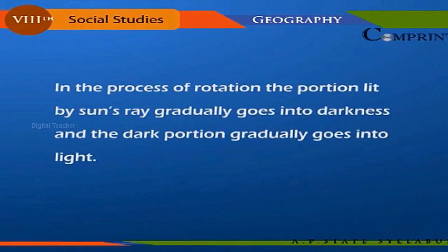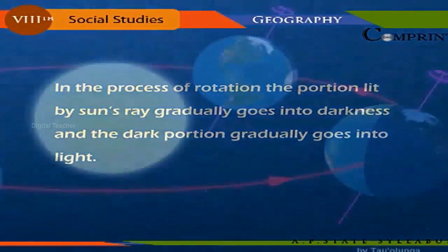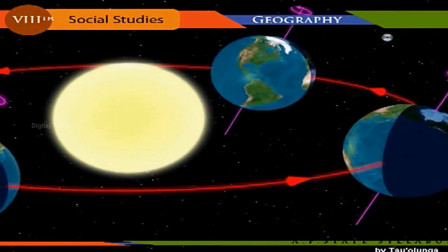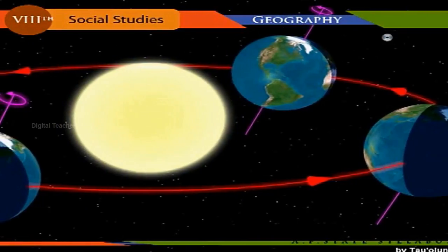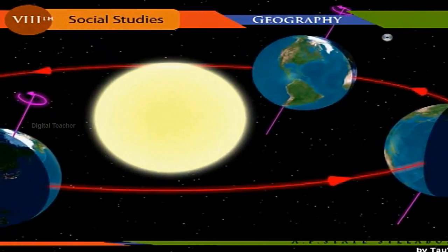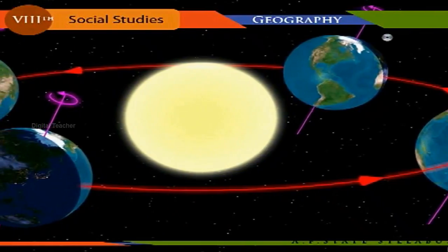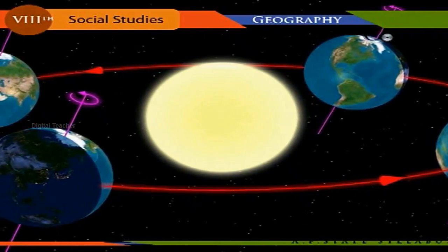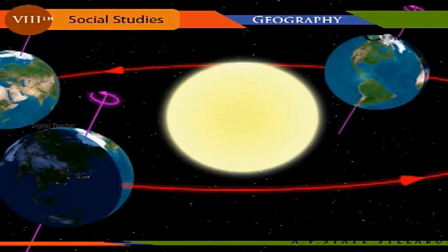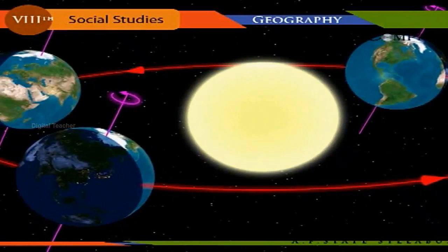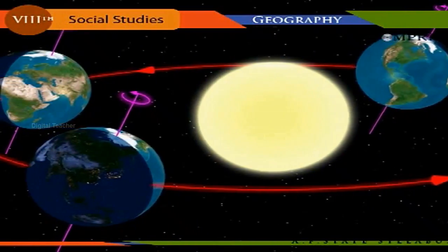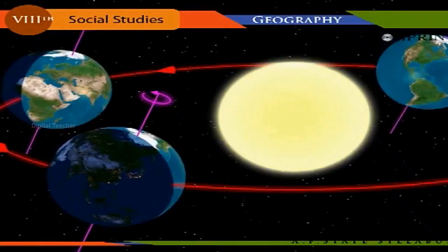Day and night are caused due to earth's rotation. In the process of rotation, the portion lit by the Sun's rays gradually goes into darkness, and the dark portion gradually goes into light. The earth also moves around the Sun while moving around its axis; this movement is called revolution. The fixed and regular path through which earth revolves around the Sun is called orbit, and this orbit is elliptical in shape.